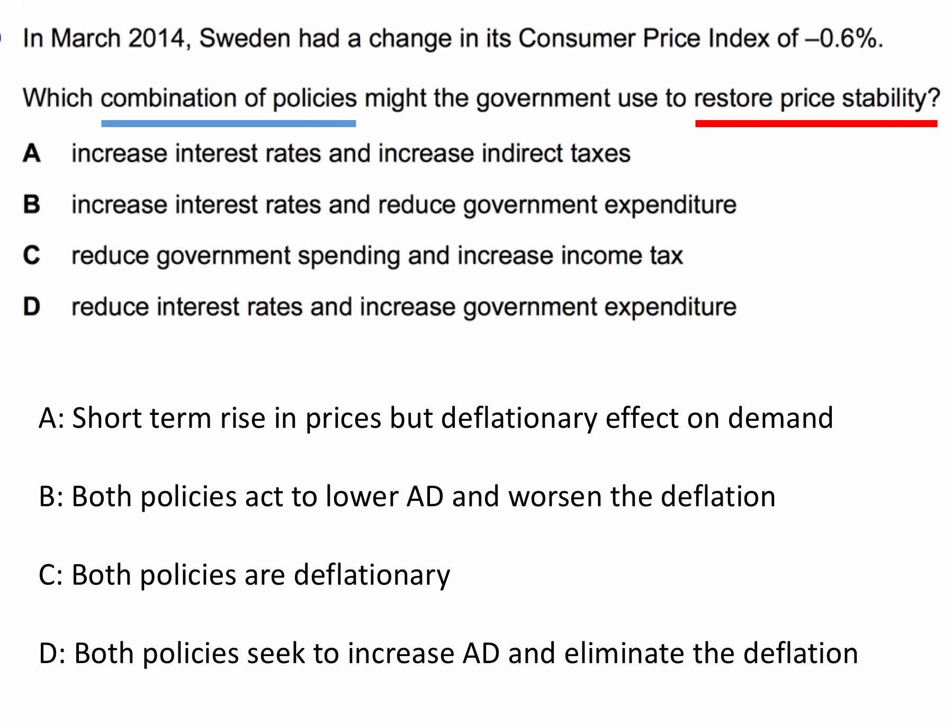Option B is wrong because both policies are deflationary in terms of demand, making the deflationary situation worse. Option C — cutting government spending and increasing income tax — will lower people's disposable incomes, and both policies are again deflationary.